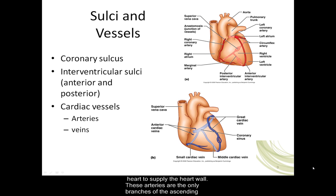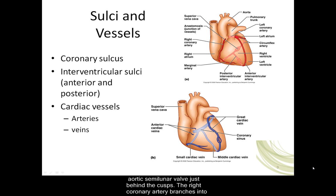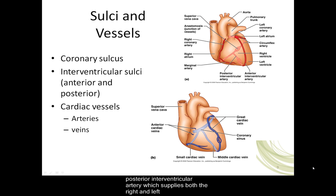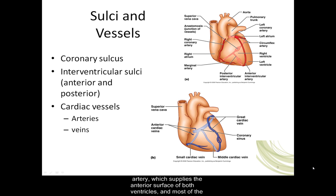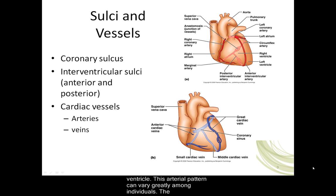Left and right coronary arteries travel in the coronary sulcus of the heart to supply the heart wall. These arteries are the only branches of the ascending aorta, and their openings are located immediately superior to the aortic semilunar valve just behind the cusps. The right coronary artery branches into the right marginal artery, which supplies the right border of the heart, and the posterior interventricular artery, which supplies both the right and left ventricles. The left coronary artery branches into the anterior interventricular artery, which supplies the anterior surface of both ventricles and most of the interventricular septum, and the circumflex artery, which supplies the left atrium and ventricle. This arterial pattern can vary greatly among individuals.